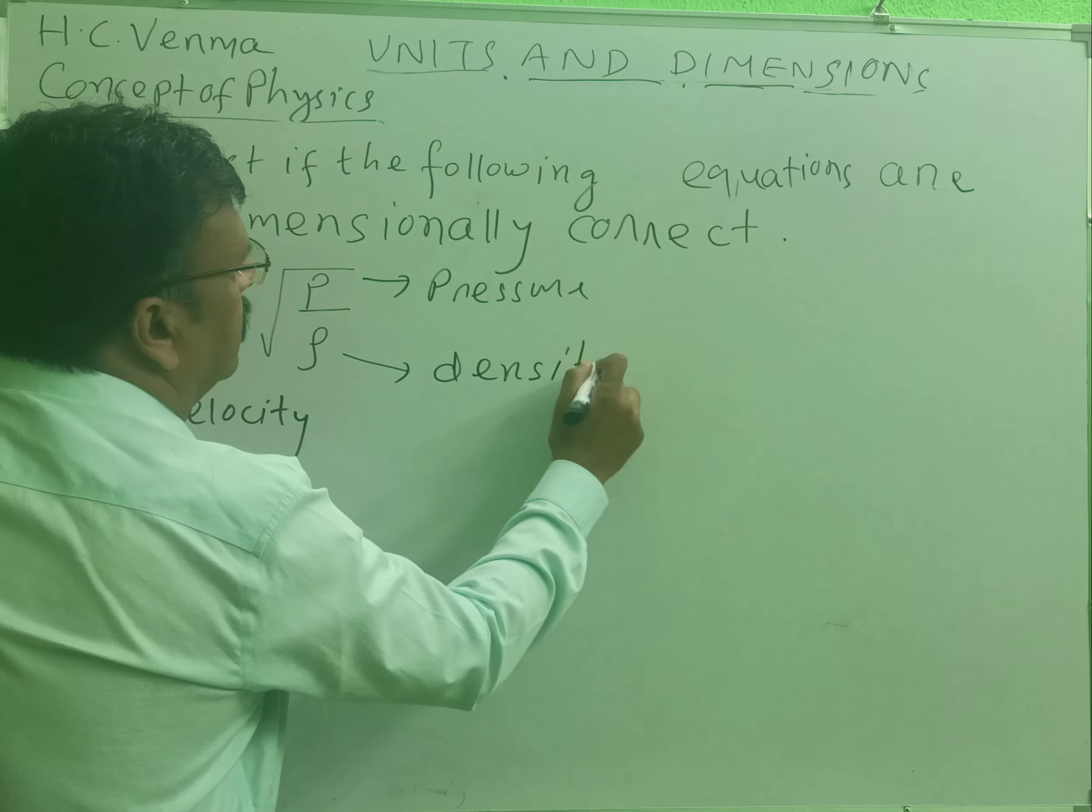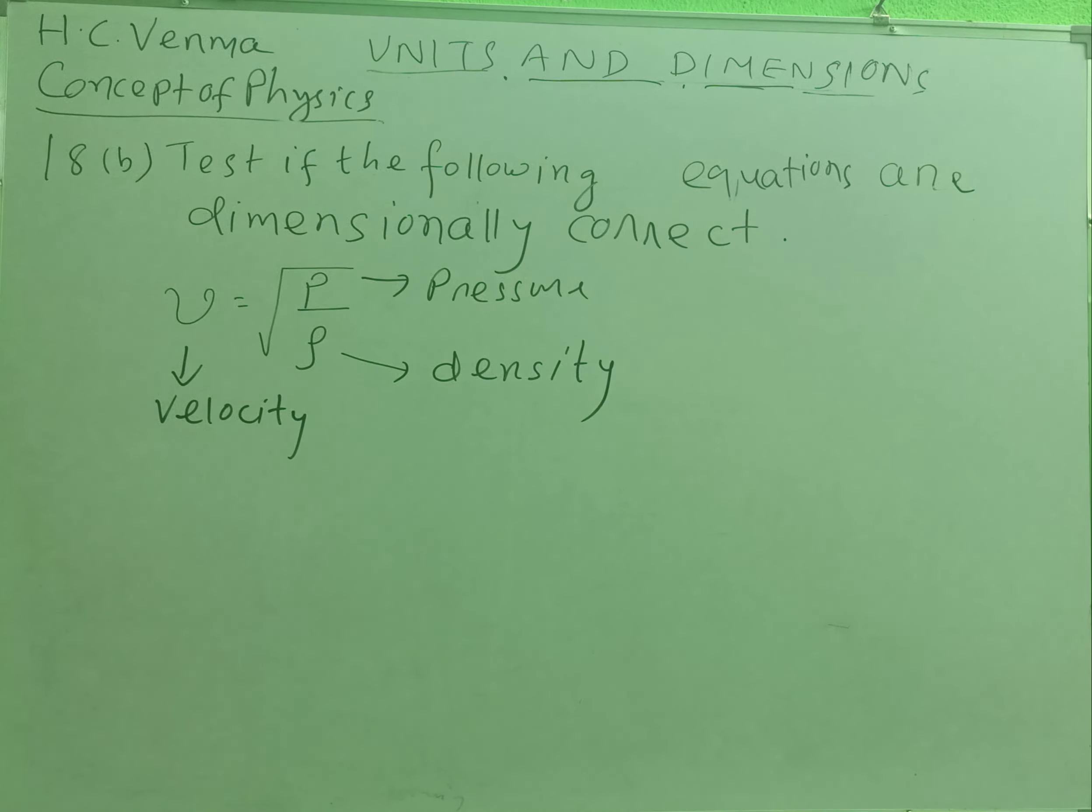How can we know whether an equation is dimensionally correct or not? We have to find out the dimensions of the left-hand side and the dimensions of the right-hand side, and see that both are the same.